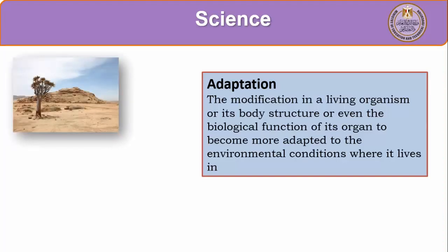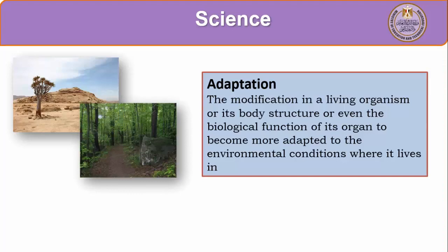For example, in the desert there are very hard conditions — little water, very high temperature during the daytime, and very cold at night, with no available food. Animals adapt to cope with this environment. In forest environments, a large number of living organisms with very wide diversity are adapted to the way they live, get their food, and reach water.